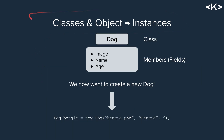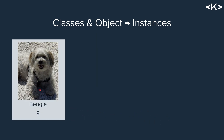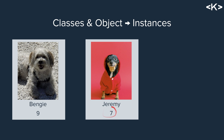Let's look at a concrete example — classes and objects as instances. Say I have a dog class, and its members are the following fields: an image (a string), a name (a string), and an age (an integer). If we want to create a new dog, we write: dog Benji equals new dog — passing in the image string, the name string, and the age. Just like that, we've created a new instance of the dog class. We can do this again and now we have Jeremy, who is seven years old. Both Benji and Jeremy are of the dog class, but they are individual objects or instances of that class.